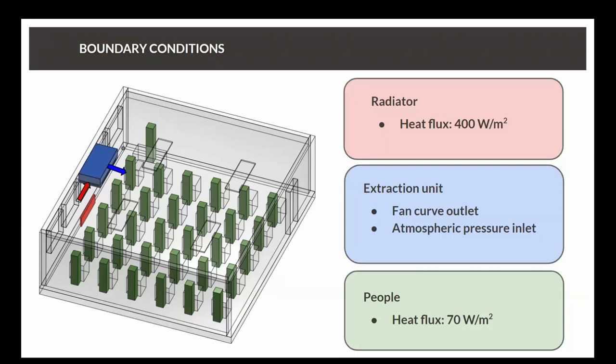And finally, once we have the mesh, the only thing we need to worry about is to define our boundary conditions. So apart from all the walls that can be automatically assigned as a standard adiabatic wall, we need to define both the radiator and the people in red and green in the picture as heat sources, as a heat flux of 400 watts per meter squared and 70 respectively. And then for the extraction unit, we have both conditions like a fan curve outlet from the extraction unit point of view, putting air into the room. And this fan curve means we will be able to input a curve of pressure versus flow rate. So depending on the conditions, you will be putting more or less air into the room. And then just an atmospheric pressure inlet back to the extraction unit in the red flag on the side of the unit.